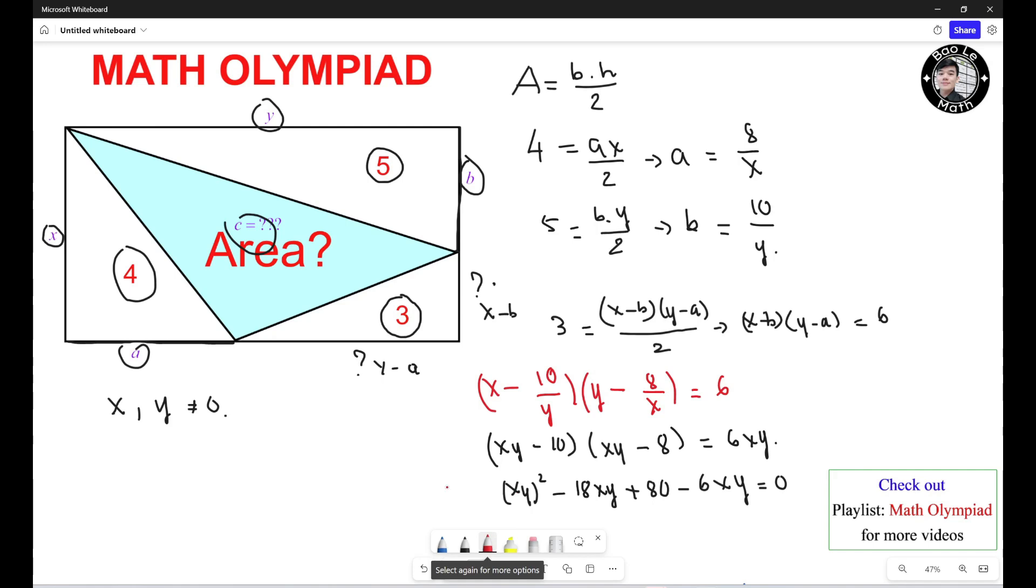I subtract SY both sides so 6SY equals 0. Now I need to rearrange this one should be SY squared minus 18 and minus 6, it should be minus 24SY plus 80 equals 0. Now this is quadratic equation with respect to SY.